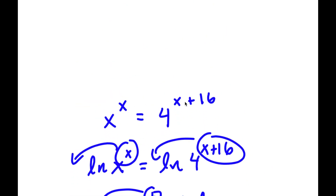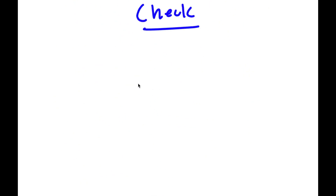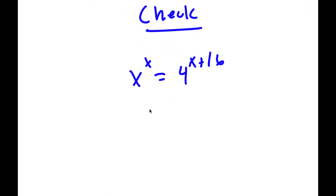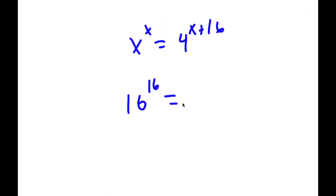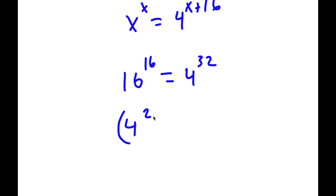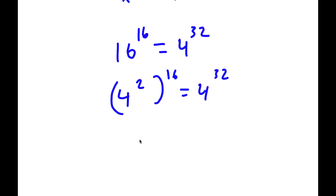For a second check: with x equals 16, I have 16 to the power of 16 equals 4 to the power of 32. Since 16 is 4 squared, I have (4 squared) to the power of 16, which equals 4 to the power of 32. So 4 to the power of 32 equals 4 to the power of 32. Confirmed.